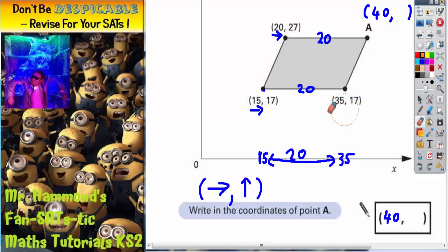Now we've got to think about how far up point A is. Well, point A, if you start from zero and go up to level with point A, it will be level with about there. And we already know that point A is level with this point here. So the question is, how far up is this point?